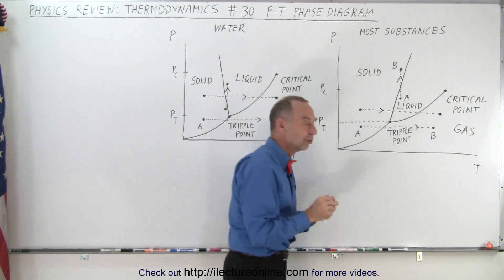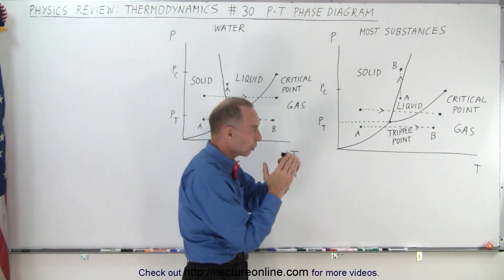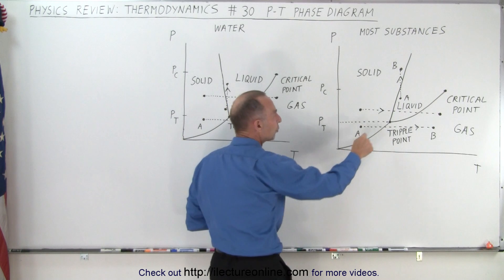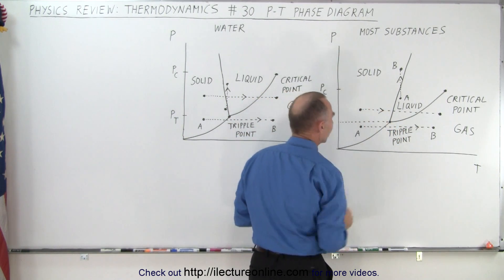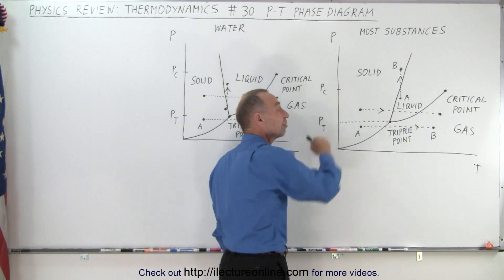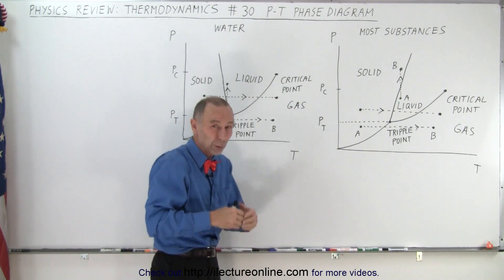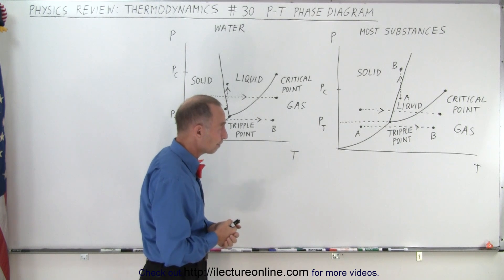The triple point is the point where the pressure and the temperature are just so that all three phases can coexist at the very same time. You can have solid, liquid, and gas at the very same time. That typically happens at very, very low pressures, like 1,000th the pressure of the atmosphere, or something like that.